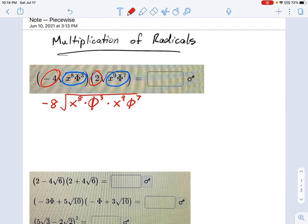Now remember, when you're multiplying variables that have exponents, you add up the exponents. So this becomes negative 8, and we add up the exponents of x.